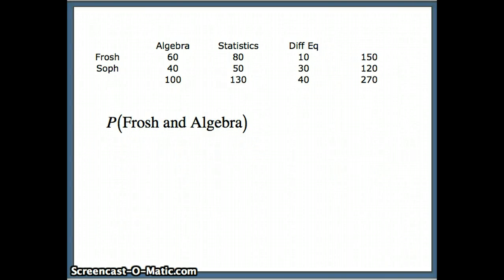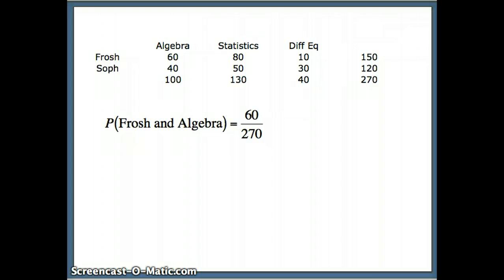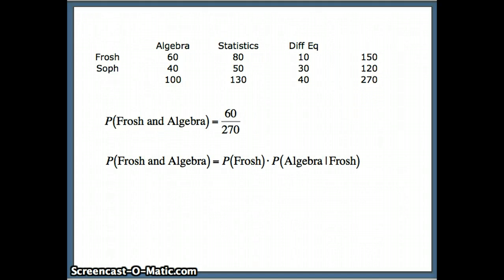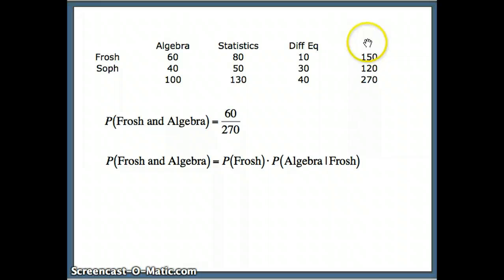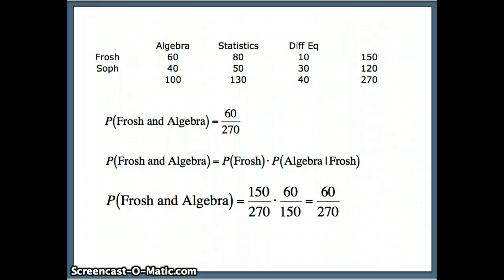Freshmen and algebra: how many people are both freshmen and in algebra? 60 people out of the entire universal set of 270. Using our rule, P(Frosh and Algebra) = P(Frosh) × P(Algebra|Frosh). The probability of being a freshman is 150 out of 270. Algebra given freshman — of the freshmen, 60 out of 150 are in algebra. This gives 60 out of 270, which matches what we read directly from the table.